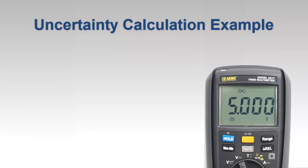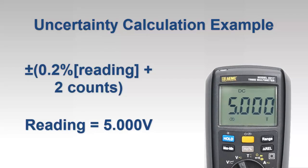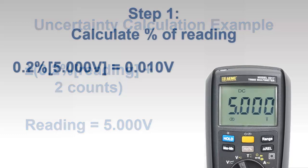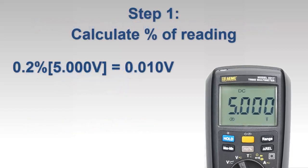Now let's apply what we've learned. We've hooked up a 6,000-count multimeter to a battery. This instrument features an uncertainty specification of plus or minus 0.2% of the reading, plus two counts, when measuring DC voltage. With the range at the lowest setting, we get a reading of 5.000 volts. We start by deriving 0.2% of the reading, or approximately 0.01 volts.